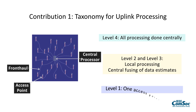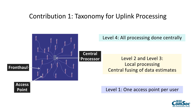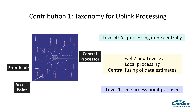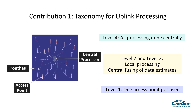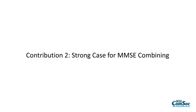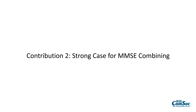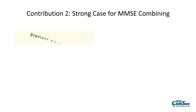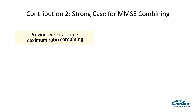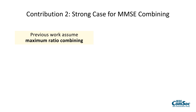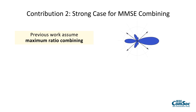At Level 1, each user is only served by one access point, so it becomes a bit like a cellular network. The second contribution is that the authors make a strong case for using something called MMSE processing. Previously in the cell-free massive MIMO literature, people have been using maximum ratio combining.